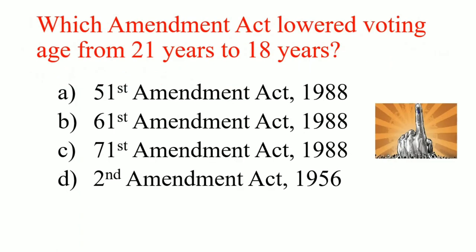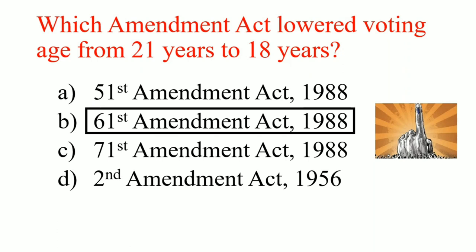Which amendment act lowered voting age from 21 years to 18 years? Answer: 61st amendment act 1988.